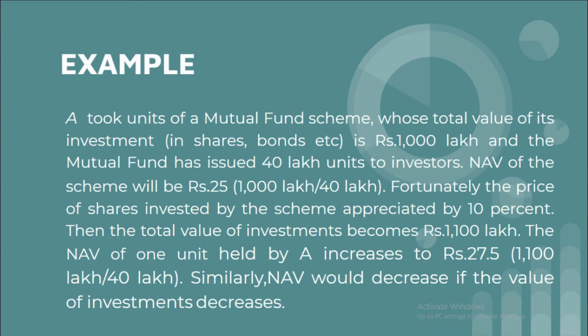For example, Mr. A took units of a mutual fund scheme whose total value of investment is Rs. 10,00,000 and the mutual fund has issued 40,000 units to investors. The NAV would be Rs. 25, calculated as total value of the scheme divided by number of units issued: 10,00,000 divided by 40,000 equals Rs. 25.